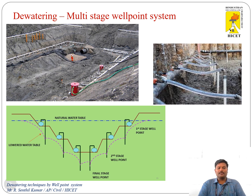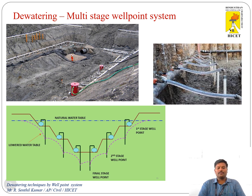This picture shows the multi-stage well point system. In this line sketch, the initial water table — the natural water table — is very near to the ground surface, shown by the blue color line. After introducing the well points at different stages, you can excavate the soil in three different stages. At each stage you introduce a well point: the first stage, second stage, and final stage. After introduction of the well points, the soil moisture content moves towards the well point and that water is pumped out using a pump system.